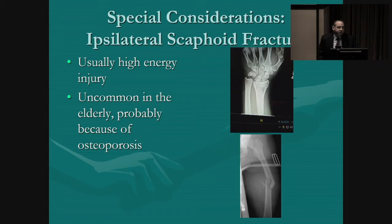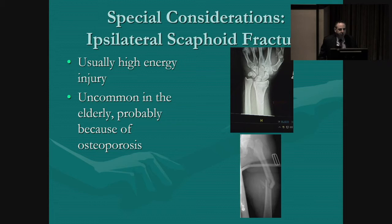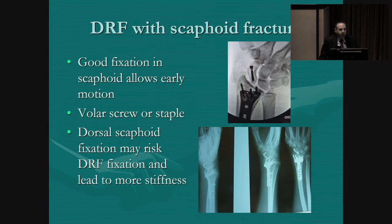The other special consideration is the ipsilateral scaphoid fracture. These are not rare and usually happen in high-energy injury situations. They're uncommon in the elderly, probably because osteoporosis leads to a fracture of the radius and protects the scaphoid. This is the hand surgeon's equivalent of the femoral shaft fracture with the femoral neck fracture — you have to make sure you don't miss the more problematic fracture when dealing with the obvious one. The treatment is usually to fix both fractures.